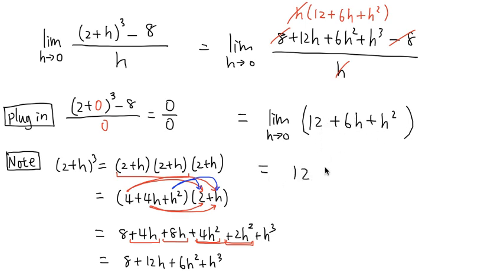This is going to be 12 plus 6 times h, but h is approaching to 0, so I will plug in 0 into this h. And then I will add h squared, but h is equal to 0, so I will plug in 0 into the parentheses right here. Well, 6 times 0 is 0, 0 squared is 0, so I will end up with a nice number. This is a nice number, 12. And that will be my nice answer for the limit. That's it.